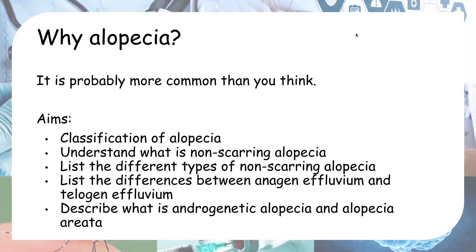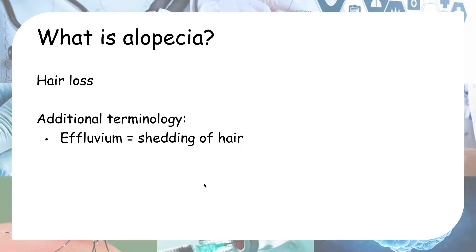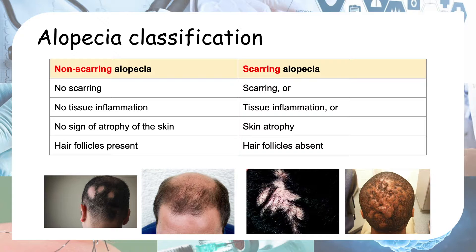First off, what is alopecia? Alopecia is basically hair loss. An additional term worth noting is 'effluvium,' which means shedding of hair — this comes in handy later. Alopecia can be classified into two types: non-scarring alopecia and scarring alopecia.